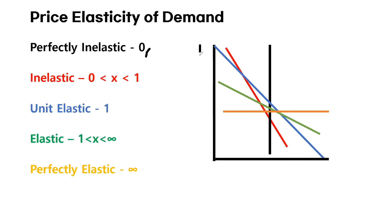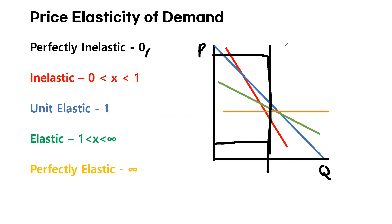So it means that no matter how much the price changes, the quantity demanded is constant. You can see on this black line that the quantity is the same no matter how much the price changes — at this price and this price, the quantity is the same.